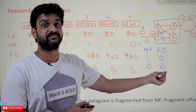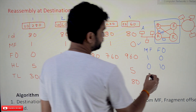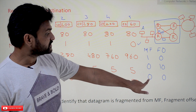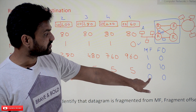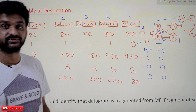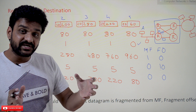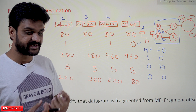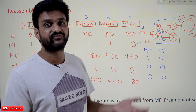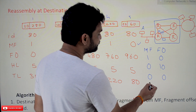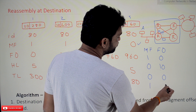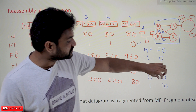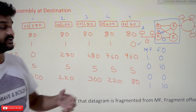What if the value of MF is zero and the fragment offset is also zero? It means that the packet transmitted by the source has not been fragmented — it will be taken as-is and sent to the upper layer. There are no fragments, so there is no need for reassembly. If MF is equal to 1 and offset is not equal to zero, it is an intermediary packet.